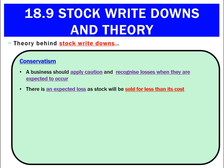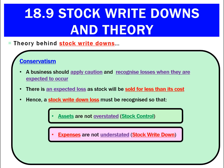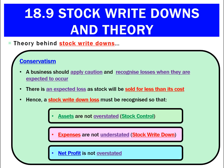We've got an expected loss when we think stock can only be sold for less than its cost. Hence, we need a stock write-down so our assets aren't overstated — called stock control — our expenses aren't understated — called stock write-down — and our overall net profit isn't overstated. So applying a stock write-down expense is going to be very conservative.